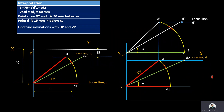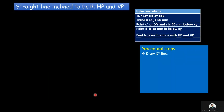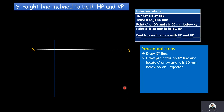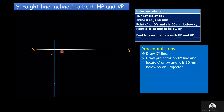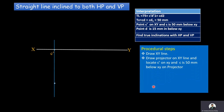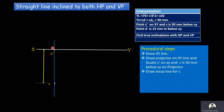As a first step, draw the XY line. After that, draw a projector on the XY line. Then locate one end of the line — end C's front view and top view. The front view C-dash is on the XY line and the top view C is at a distance of 50 mm below the XY line. Now at C, draw a locus line for C.